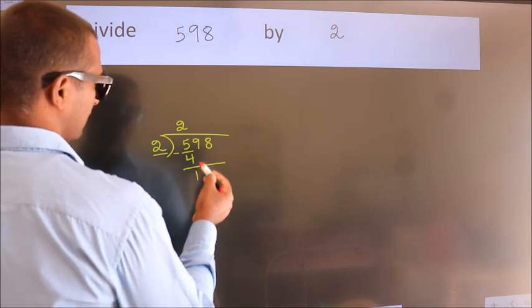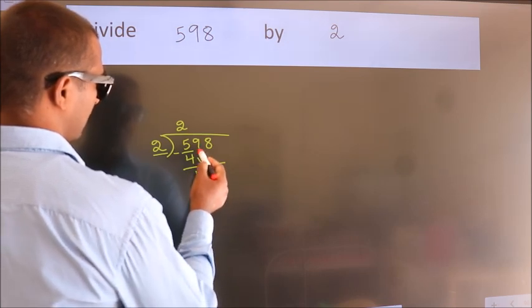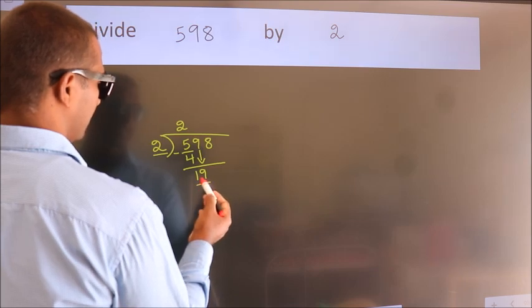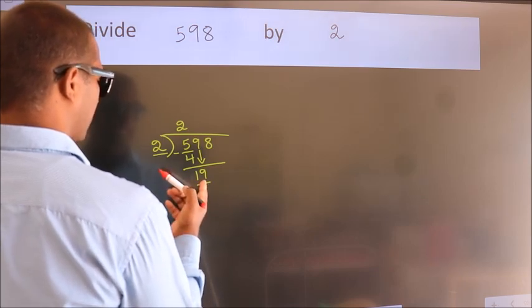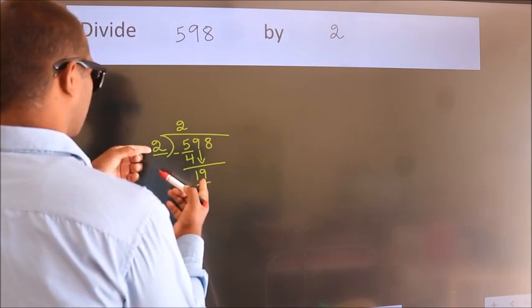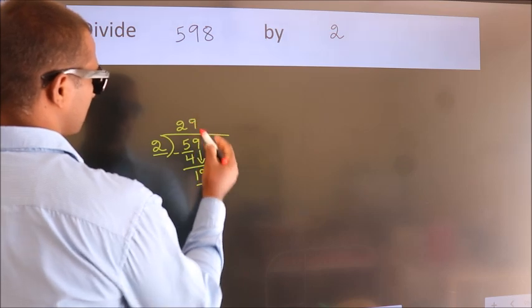After this, bring down the beside number. So, 9 down. So, 19. A number close to 19 in 2 table is 2 9s, 18.